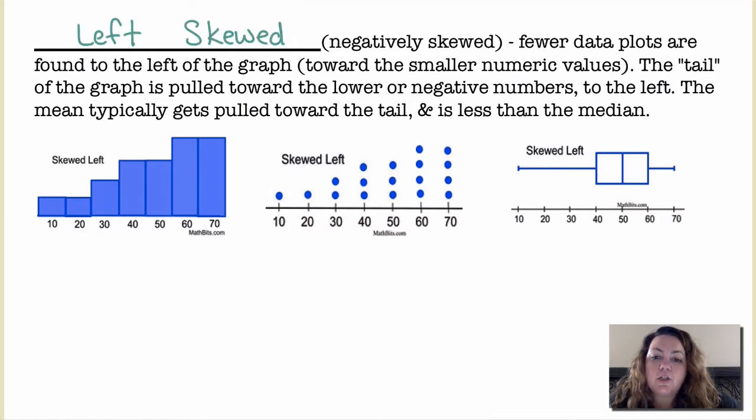A left skewed or negatively skewed distribution has fewer data points found on the left side of the graph towards the smaller numerical values. The tail of the graph is pulled towards the lower or negative numbers to the left. The mean typically gets pulled towards the tail and it is less than the median.